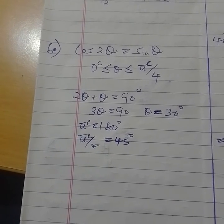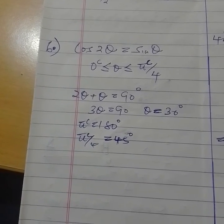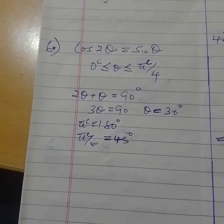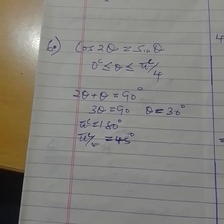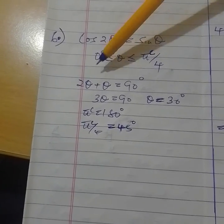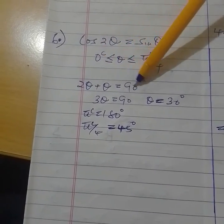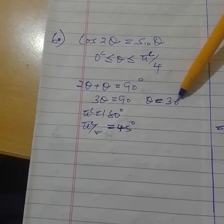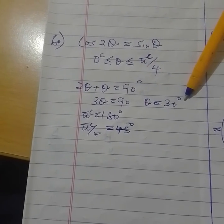You are given cos 2θ = sin θ. We know that complementary angles add up to 90 degrees. So when you take 2θ plus θ, it should give you 90. Then you get θ equal to 30 degrees.